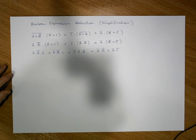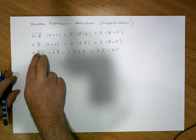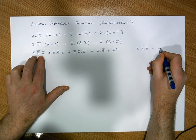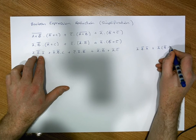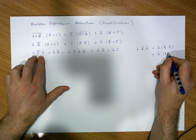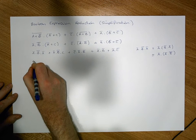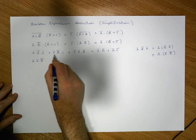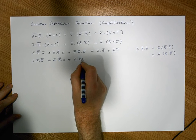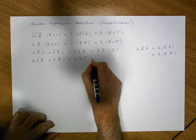When we have a conjunction of individual terms, we can associate them together and commute them to order the terms from a, a-bar, b, b-bar, and so on. For example, a-bar AND b-bar-bar AND a-bar: I associate the b-bar-bar and a-bar together, then commute them, giving a-bar AND a-bar AND b-bar-bar. So this becomes a-bar AND a-bar AND b-bar-bar in order. Similarly, a-bar AND b-bar-bar AND c reorders to a-bar AND b-bar-bar AND c, and c-bar AND a-bar AND b-bar becomes a-bar AND b-bar AND c-bar.